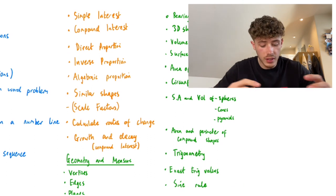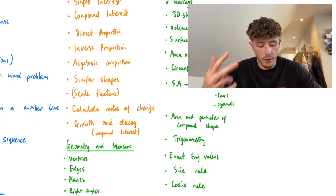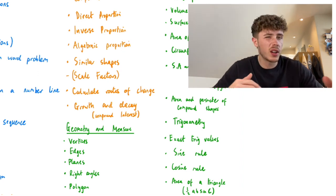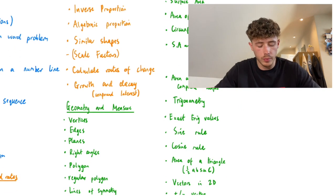Similar shapes and using scale factors - linear, area and volume scale factor. Calculating rates of change of curves, and growth and decay, kind of like compound interest but more example based.